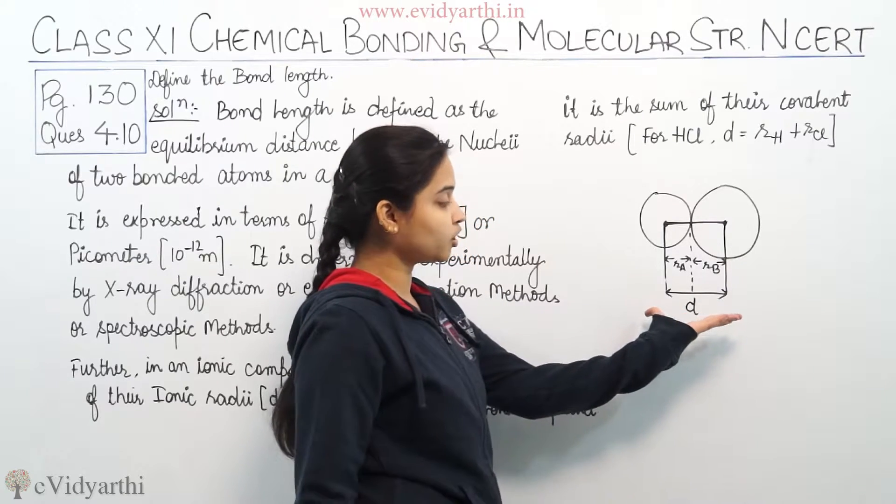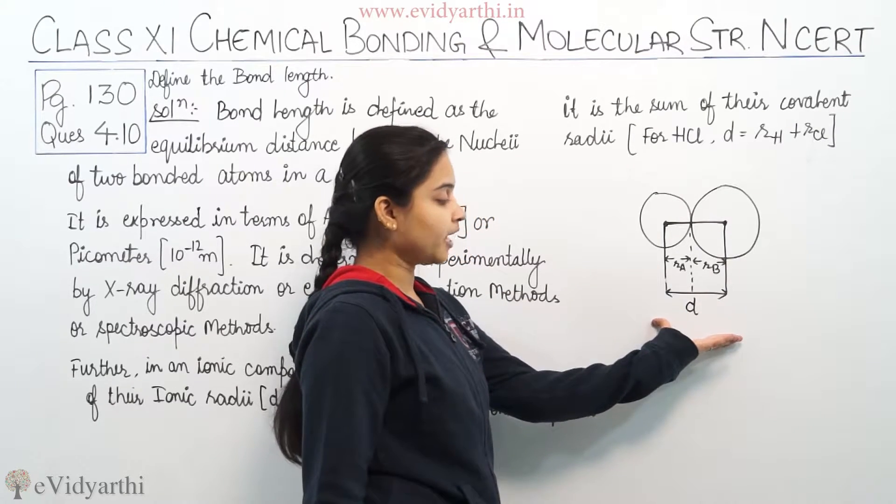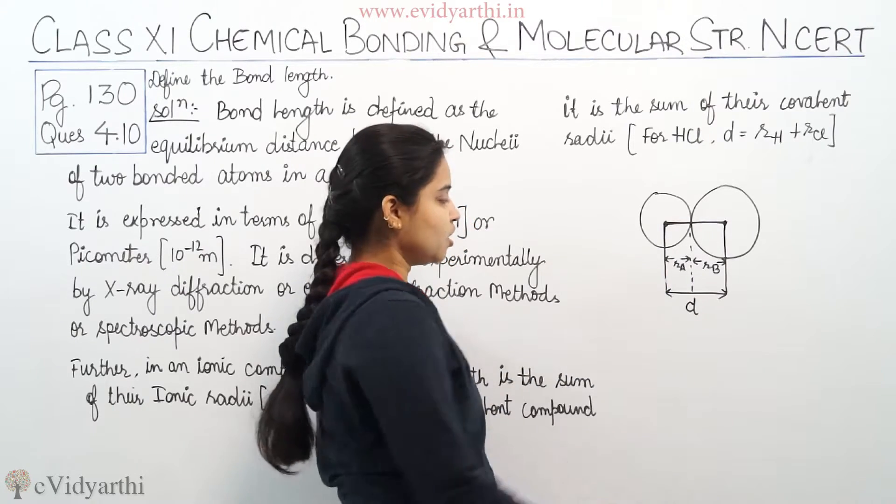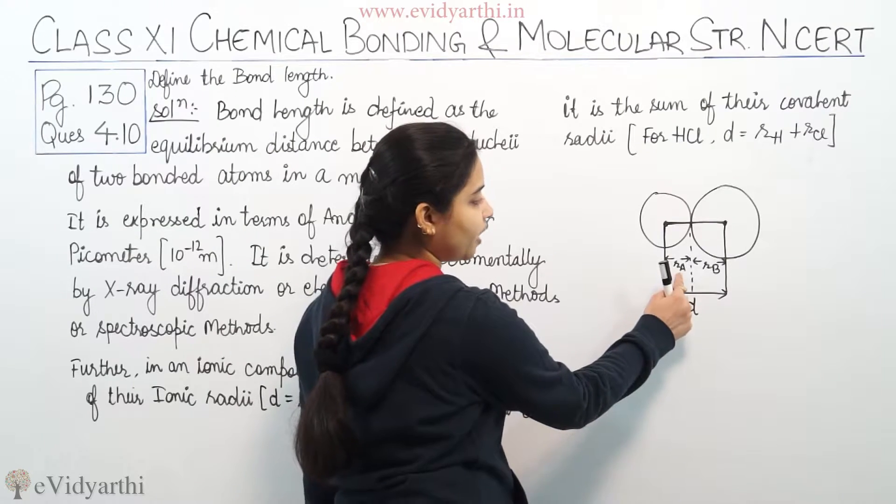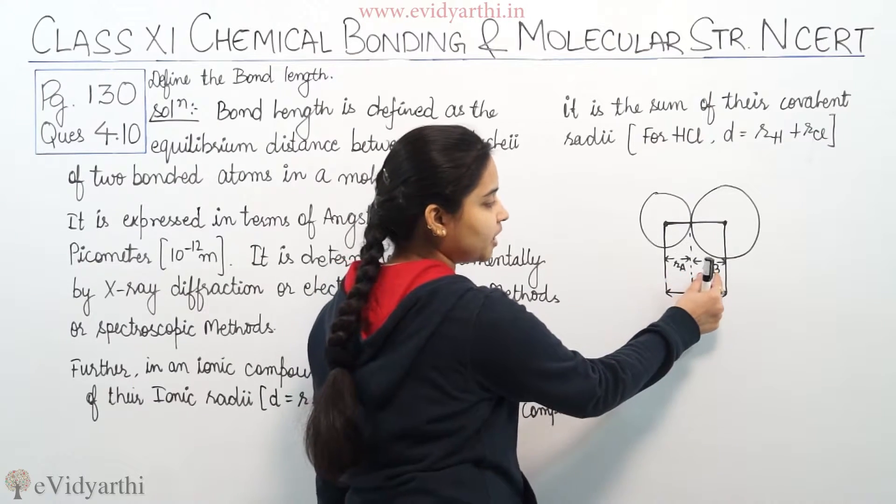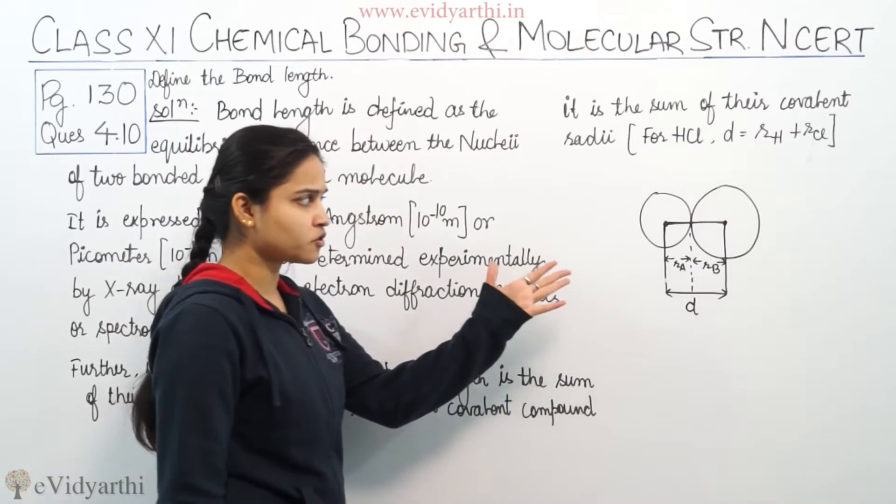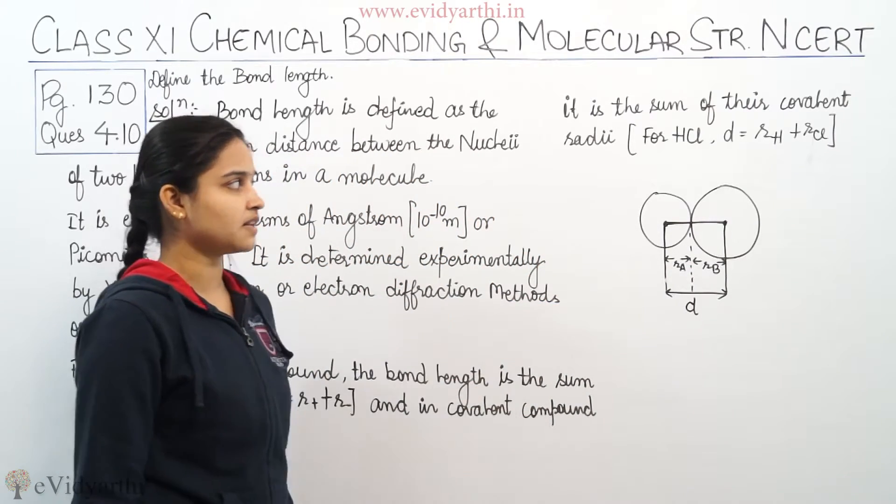So it is showing you the covalent radii. That means in covalent compounds, the bond length is defined as the sum of the covalent radii. So covalent radii with RA over here for hydrogen atom, RB over here for the chlorine atom. So it's now very much clear from the diagram itself.